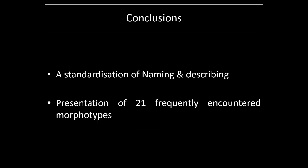In conclusion, one should view ICPN 2.0 as an updating and refining of ICPN 1.0 that especially focuses on standardizing the naming and describing of phytolith morphotypes, and the presentation of the 21 phytolith morphotypes most frequently encountered in assemblages from soils, sediments, and archaeological deposits.